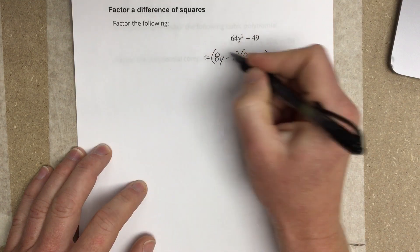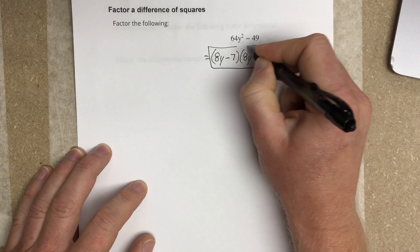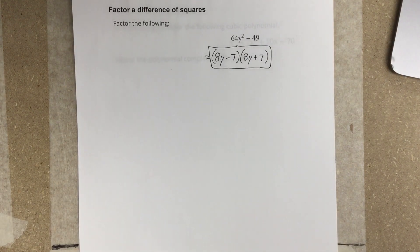So this 64y squared minus 49 factors to 8y minus 7 and 8y plus 7. And that's how you factor difference of squares.